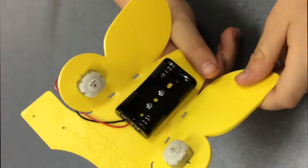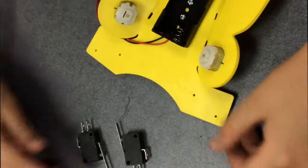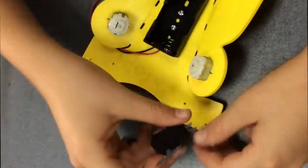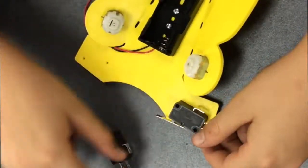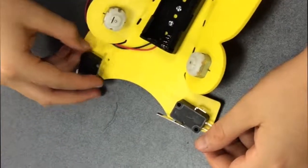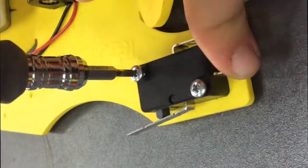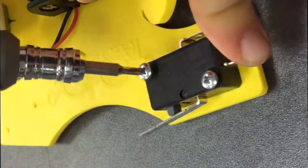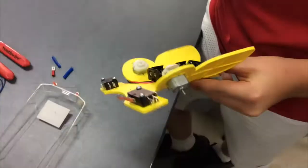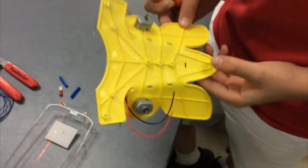At this point, this is what your butterfly should look like. Now attach the switches to the end of your butterfly with the switches facing inward. At this point your butterfly should look something like this.